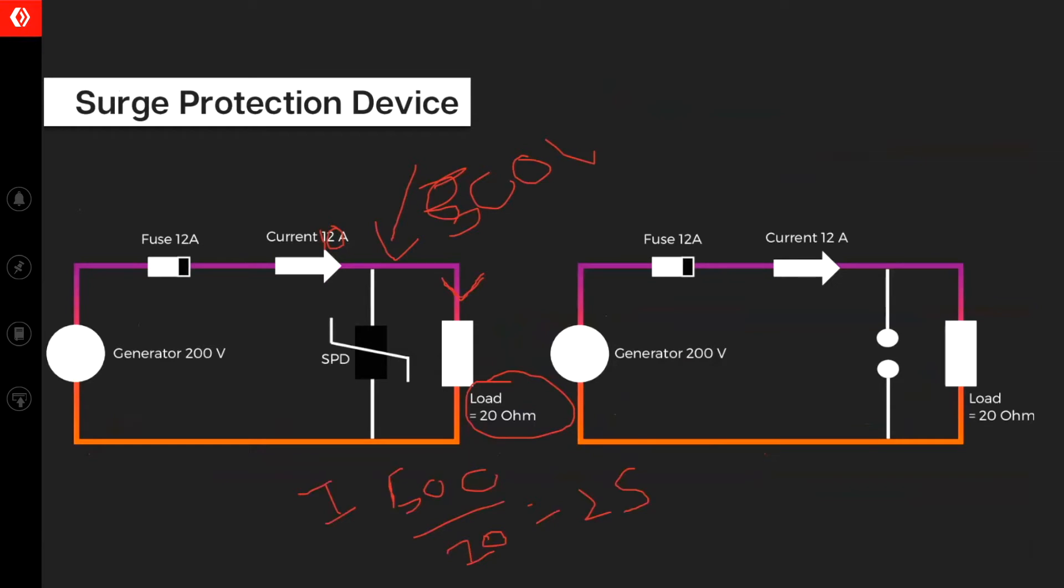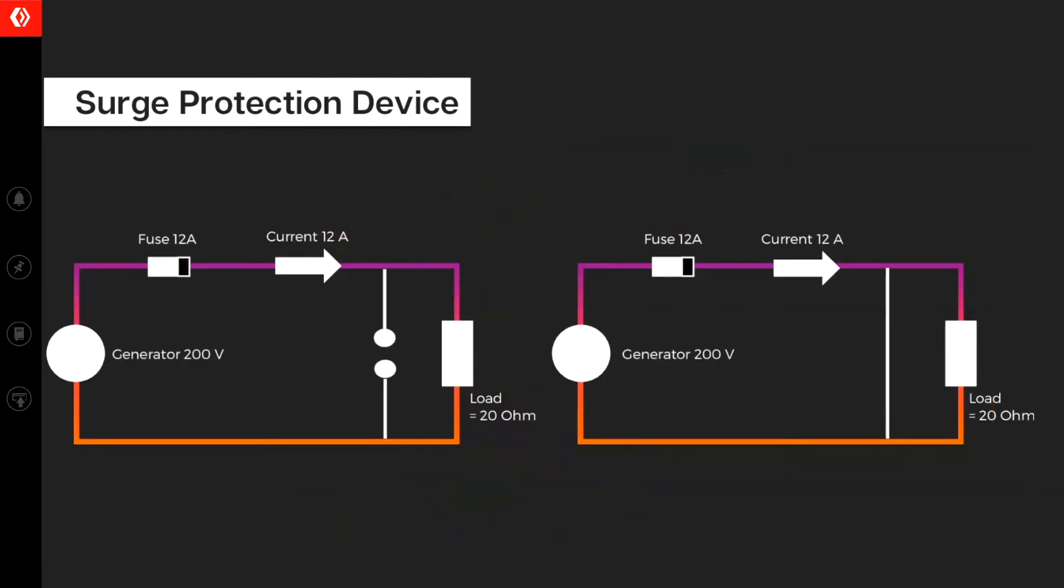So surge protection device is one such device. What surge protection does is under normal operating conditions, it acts as open circuit. And whenever your voltage is within limits, it will act as open circuit and your normal circuit will function as it always does. There is no interaction of your surge protection device. But whenever there is a surge on your circuit, what will happen is this gap will get shorted. This will short.